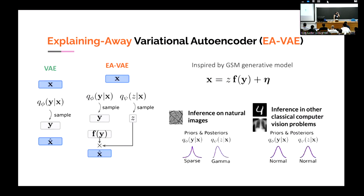We did experiments and trained both models for inference on natural images, having sparse Laplace posterior distributions for the Y variables, which are neurally inspired. We also trained for inference on classical computer vision datasets to have a more diverse scope — for example, the MNIST handwritten digit dataset and chest X-rays from MedMNIST. These were trained separately, each model on the different datasets.